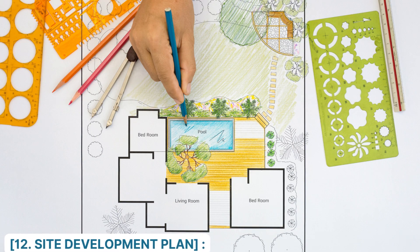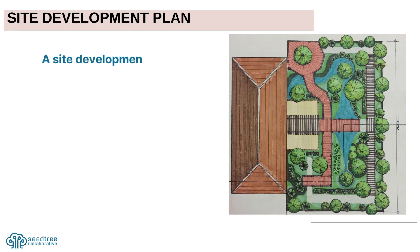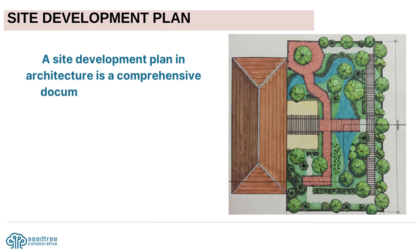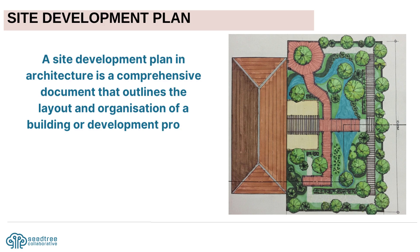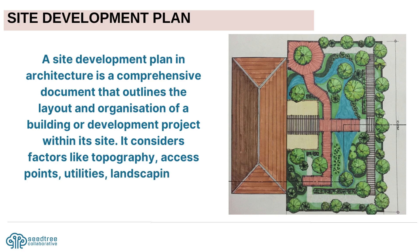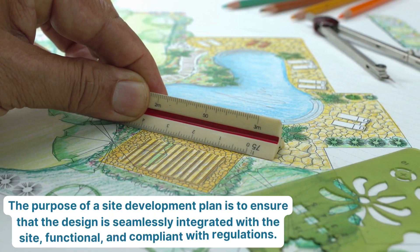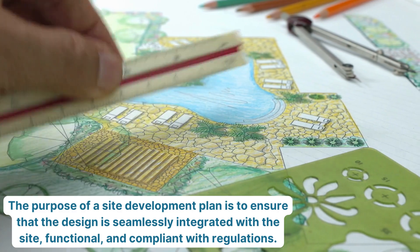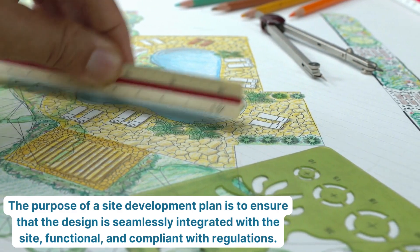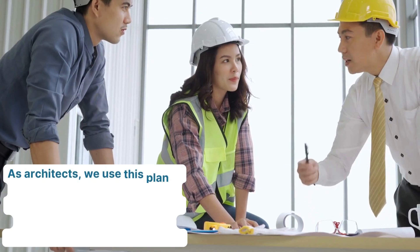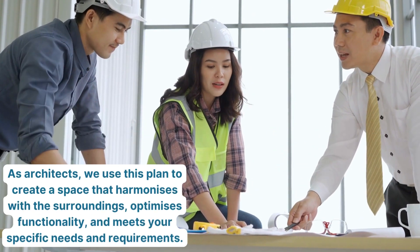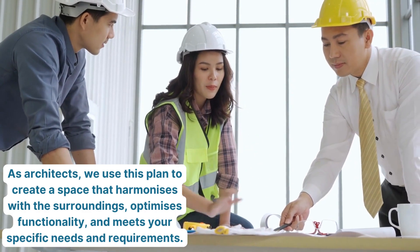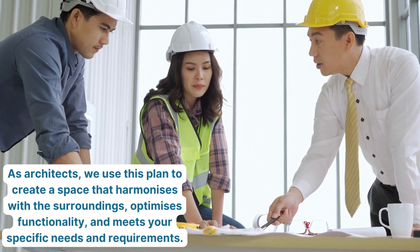Number 12: Site Development Plan. A site development plan in architecture is a comprehensive document that outlines the layout and organization of a building or development project within its site. It considers factors like topography, access points, utilities, landscaping, and environmental considerations. The purpose is to ensure that the design is seamlessly integrated with the site, functional, and compliant with regulations. As architects, we use this plan to create a space that harmonizes with the surroundings, optimizes functionality, and meets your specific needs and requirements.